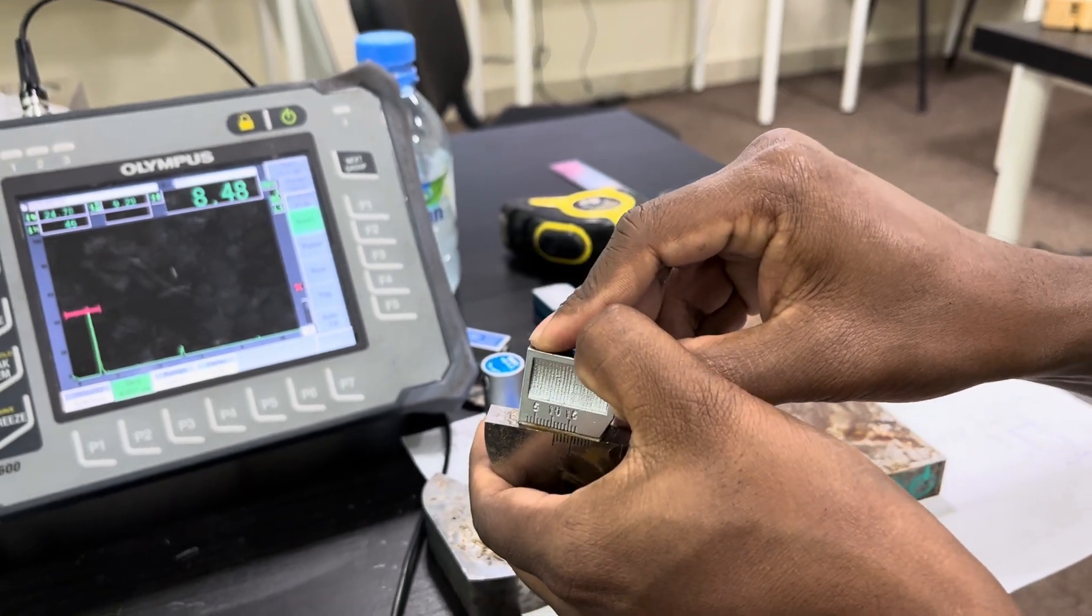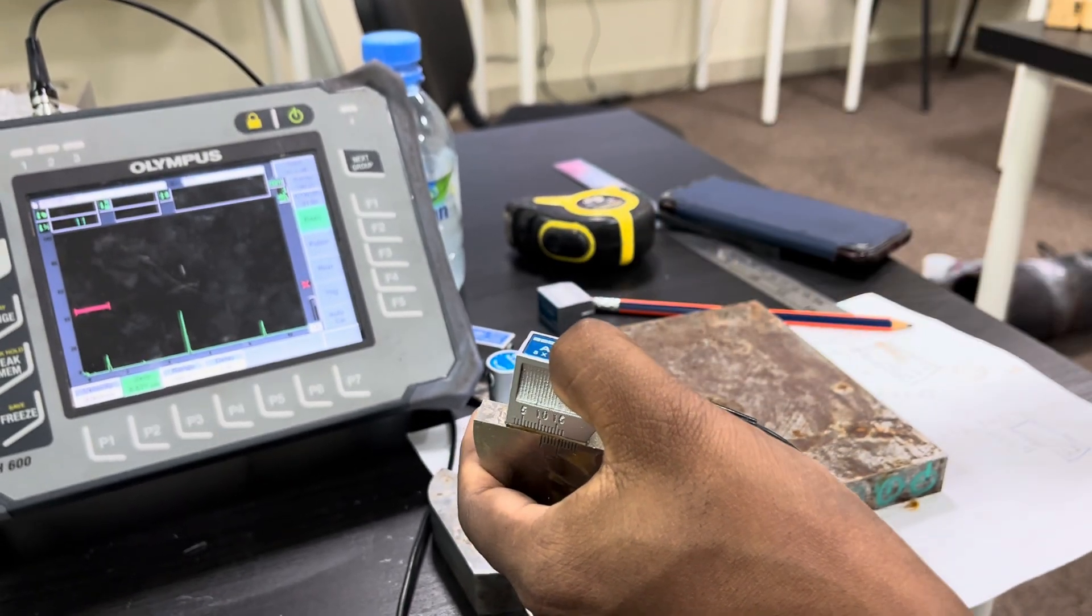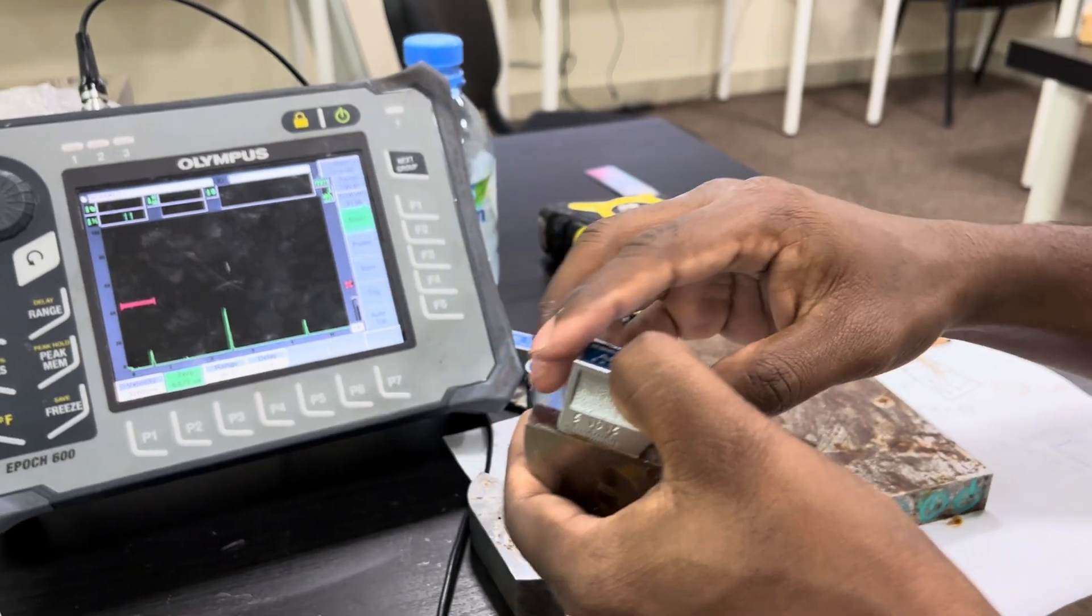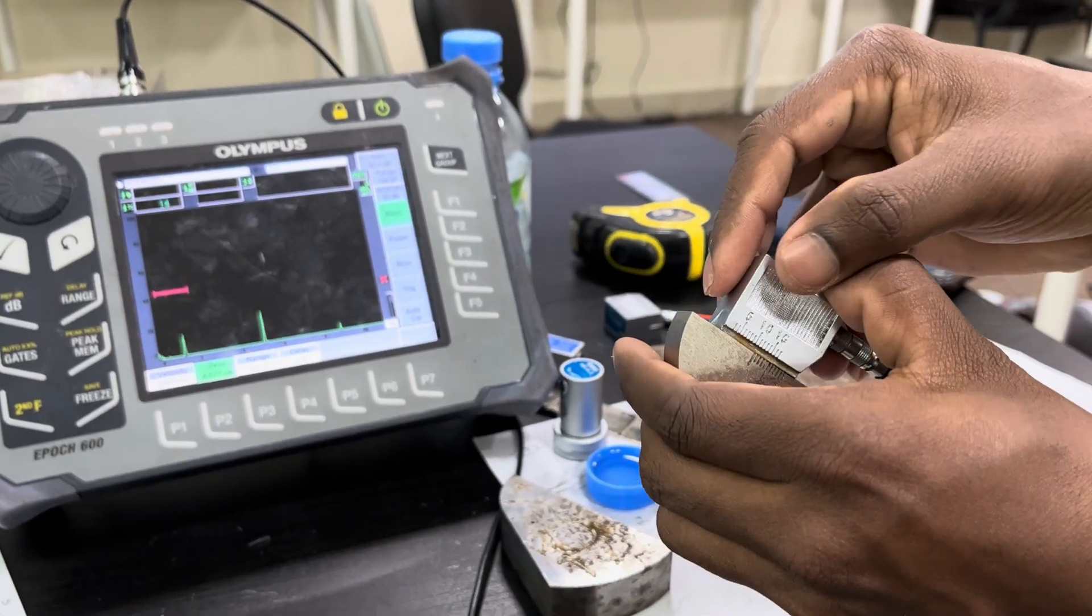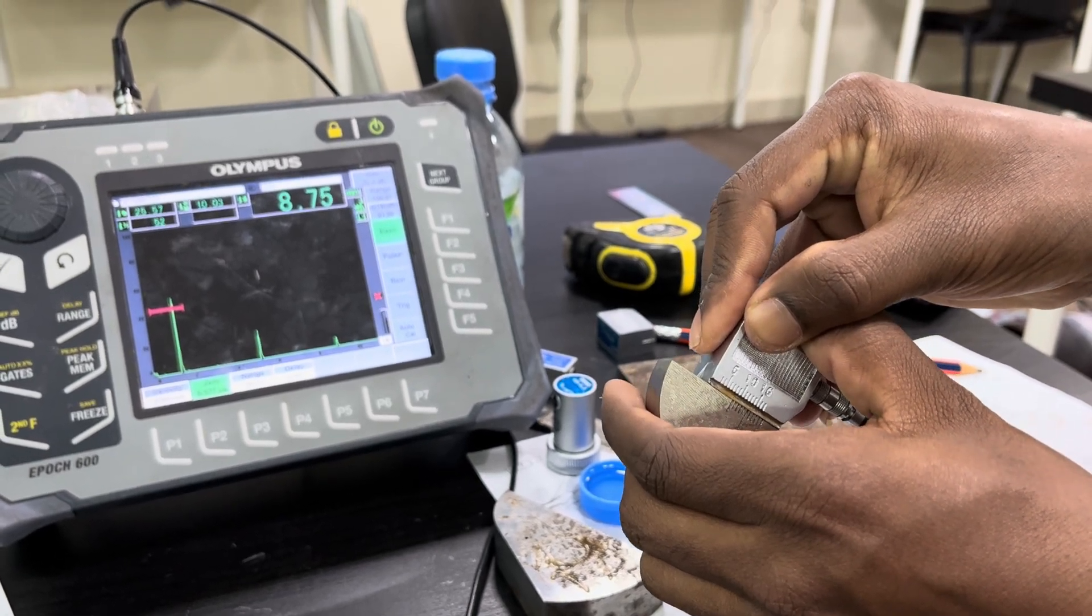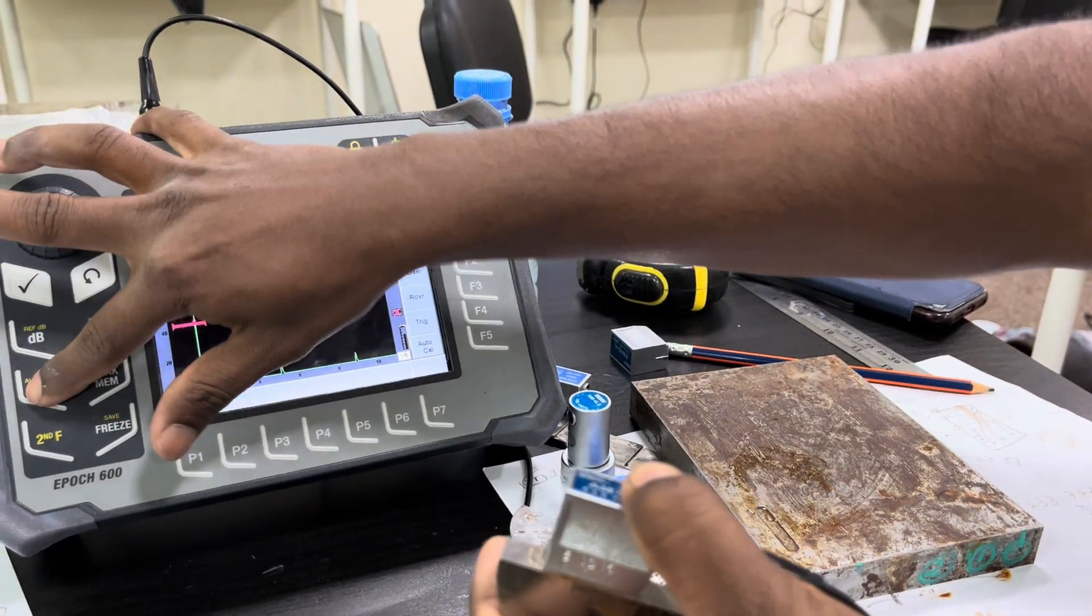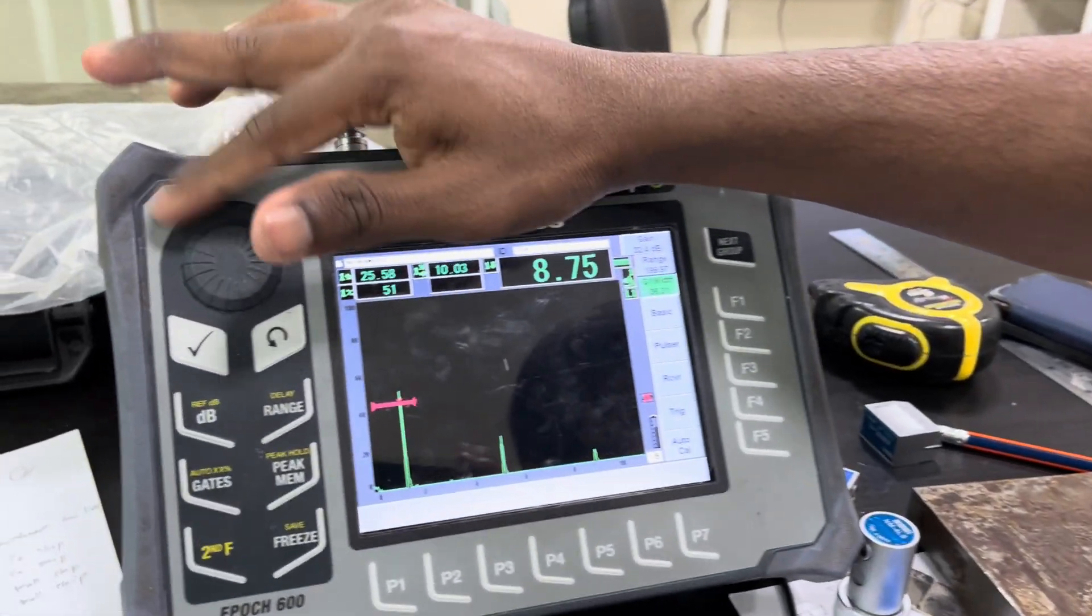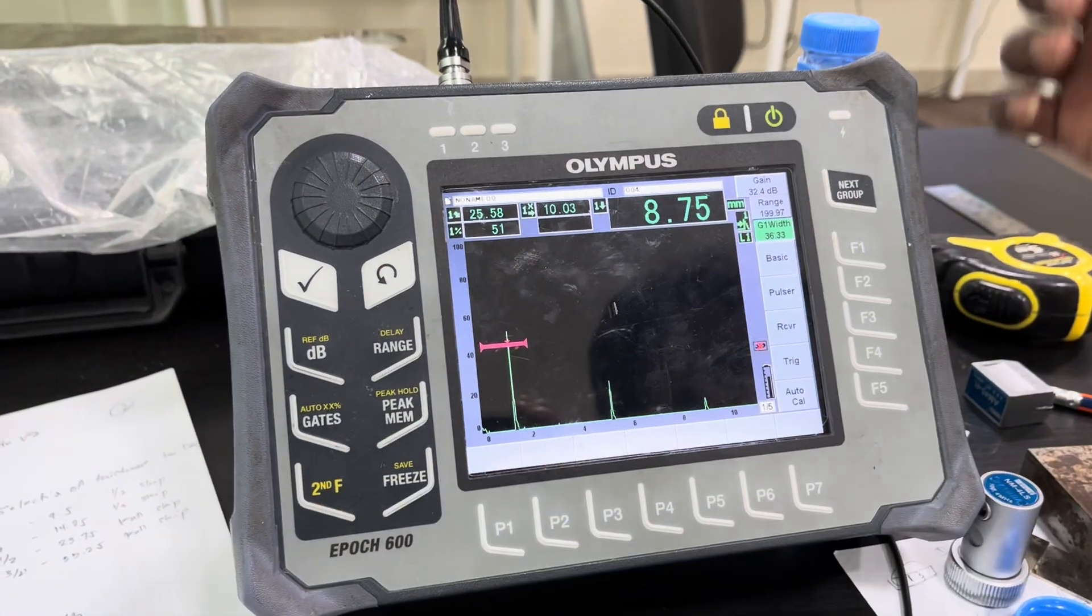So totally it travels 75mm. From the first echo at 25, it travels again 75, so the second back wall echo should come at 100. Now I am going to move the gate to the position of the second back wall echo.